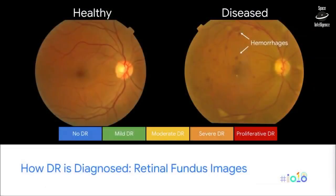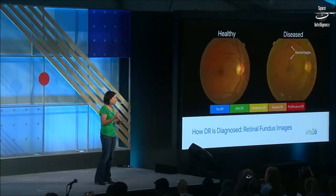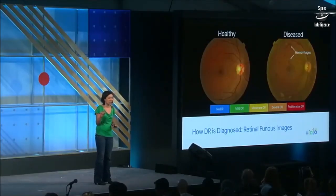What a doctor does when they get an image like this is they grade it on a scale of one to five, from no disease — so healthy — to proliferative disease, which is the end stage. When they do grading, they look for sometimes very subtle findings: little things called microaneurysms, which are outpouchings in the blood vessels of the eye that indicate how badly your diabetes is affecting your vision.